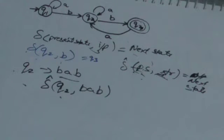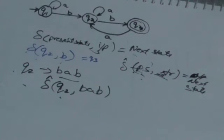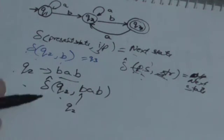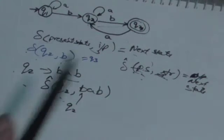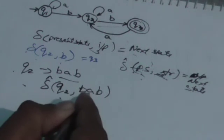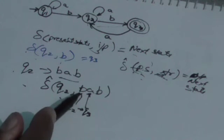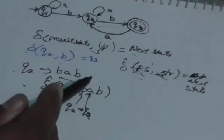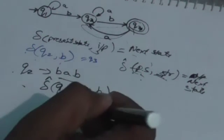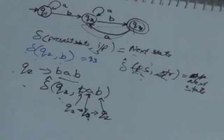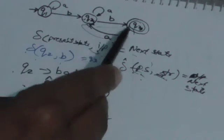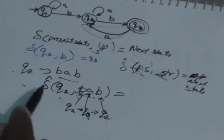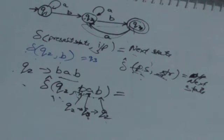Presently the machine is in state Q2 and it reads B. After reading B, it goes to Q3. When it is in Q3, it reads A — the next symbol in the string. When it is in Q3 and reads A, it comes back to state Q2. Now it has to read B, which is the next input symbol in the string. After reading this B, it jumps to Q3. So after reading the complete string BAB from state Q2, the machine transitions to Q3.